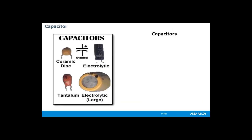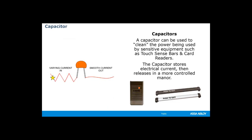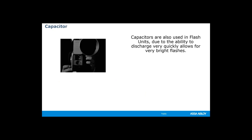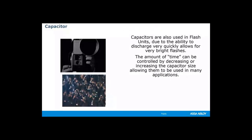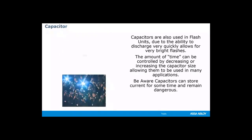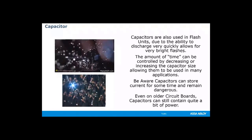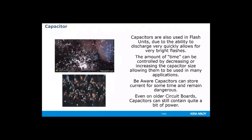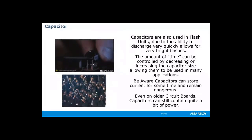The next item we're looking at is a capacitor. A capacitor is used to create clean power for sensitive equipment, such as touch bars and card readers. A capacitor stores electricity and then releases it in a more controlled manner. Capacitors are also used in different products such as flash units — because a capacitor can release electricity very quickly, it allows the flash unit to create a very bright flash. One thing to be aware of: capacitors store electricity for some time and can be dangerous. If you're ever dealing with an old circuit board, capacitors can be quite dangerous because they can retain electricity for long periods of time, so completing the contact of a capacitor could create a shock.